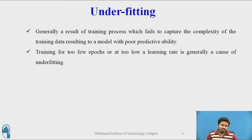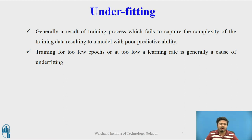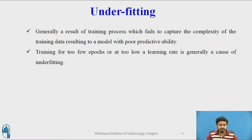Underfitting is generally a result of a training process which fails to capture the complexity of the training data, resulting in a model with poor predictive ability. Contrary to overfitting, in underfitting the model tries to be very simplistic — the algorithm or model design is such that it never captures the true essence of the predictability present in the features of the dataset. This generally results in poor predictability. Underfitting is typically caused by training on very few epochs or very few samples of the dataset.